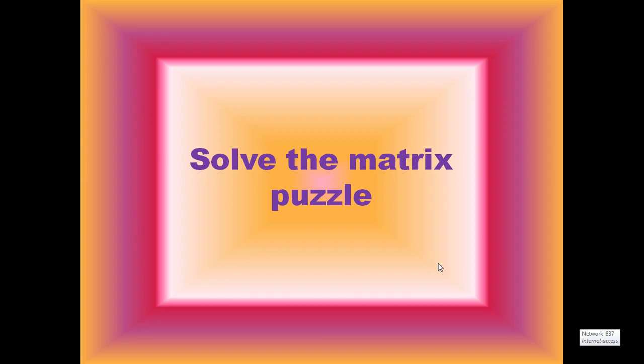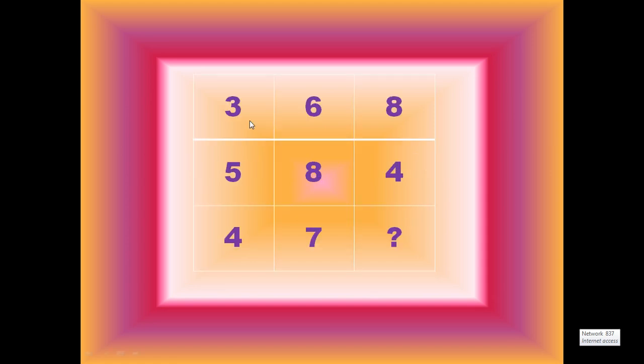Hello, welcome to my channel. Today I am going to discuss how to solve matrix puzzles. This is the problem: here we consider a 3x3 matrix. The values of the matrix are 3, 6, 8, 5, 8, 4, 4, 7, and a question mark. If you know the answer, then skip the video. If you do not know, then keep watching. Actually, this matrix can be solved by different logics.